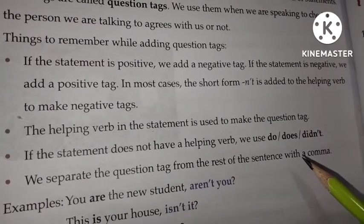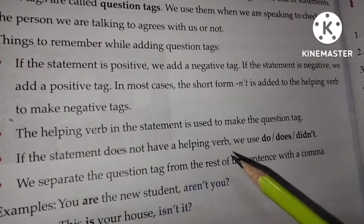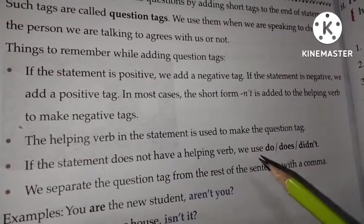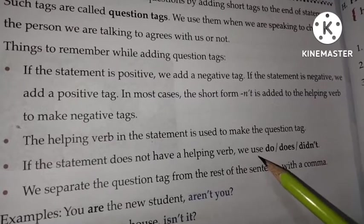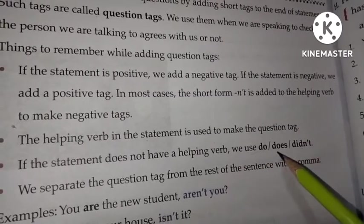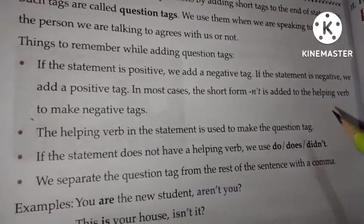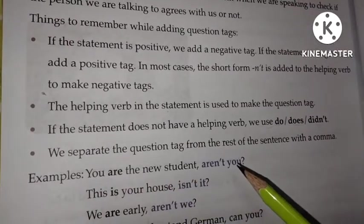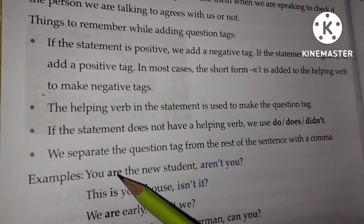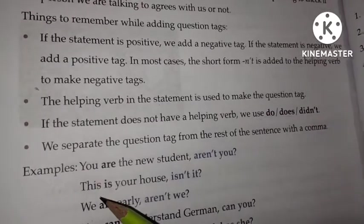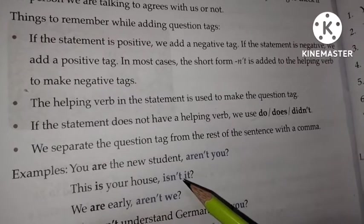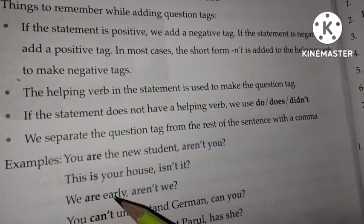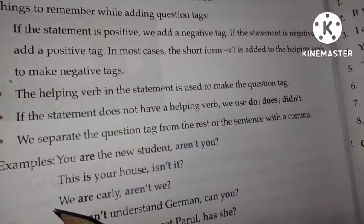We separate the question tag from the rest of the sentence with a comma. When no helping verb is given in the statement — though 90 percent of the time one is present — we must use a suitable one from do, does, or didn't. For example: 'You are the new student, aren't you?' — 'are' is the helping verb, so we add 'aren't'. 'This is your house, isn't it?' — 'is' is the helping verb.